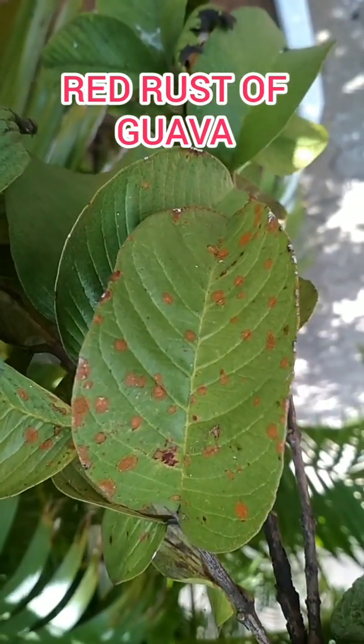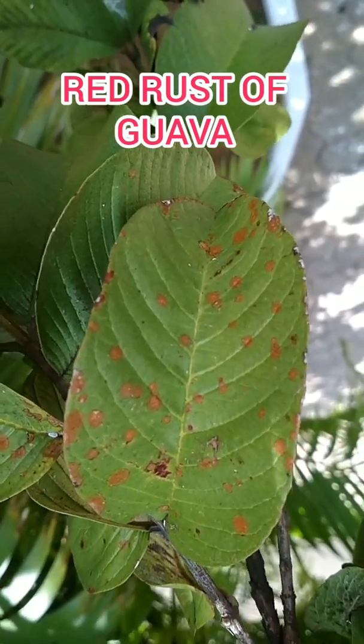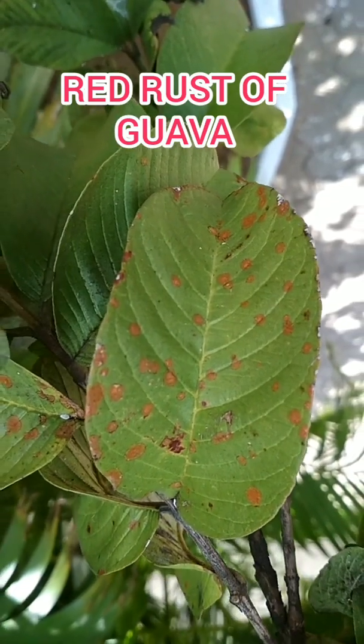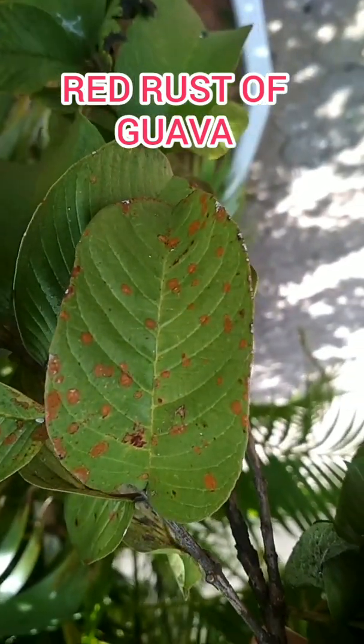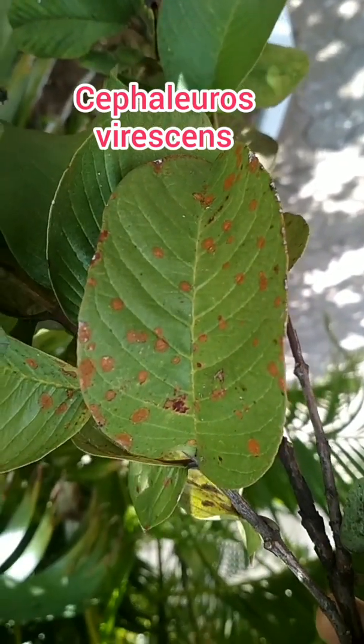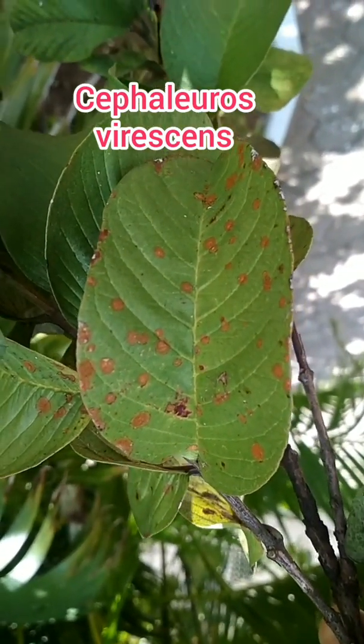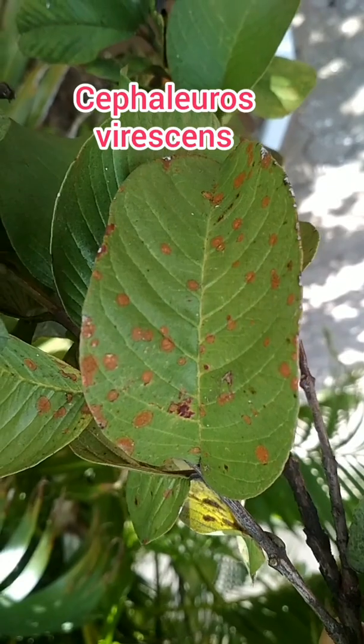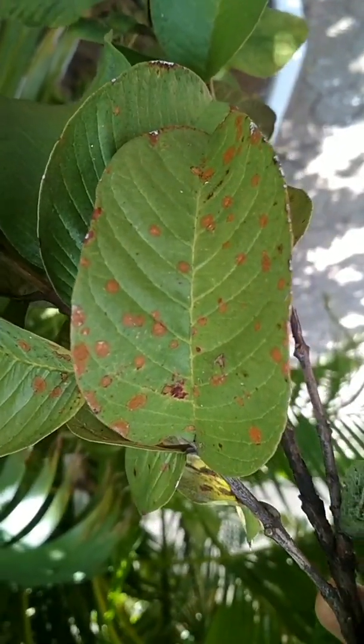Good morning students. This class is about red rust of Guava. Red rust is an algal disease. The scientific name is Cephaleuros virescens and Cephaleuros minusculus. These are the two important species of Cephaleuros. Cephaleuros is the algae.